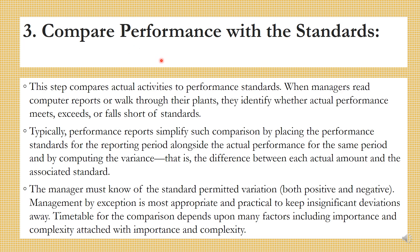Comparing the performance with these standards: once you have established standards and actual performance, you compare both. This step compares actual activities to performance standards. When managers read computer reports or walk through their plans, they identify whether actual performance meets, exceeds or falls short of standards. Typically, performance reports simplify such comparison by placing the performance standards alongside the actual performance for the same period and computing the variance — the difference between each actual amount and the associated standard. Management by exception is most appropriate and practical to keep insignificant deviations away.